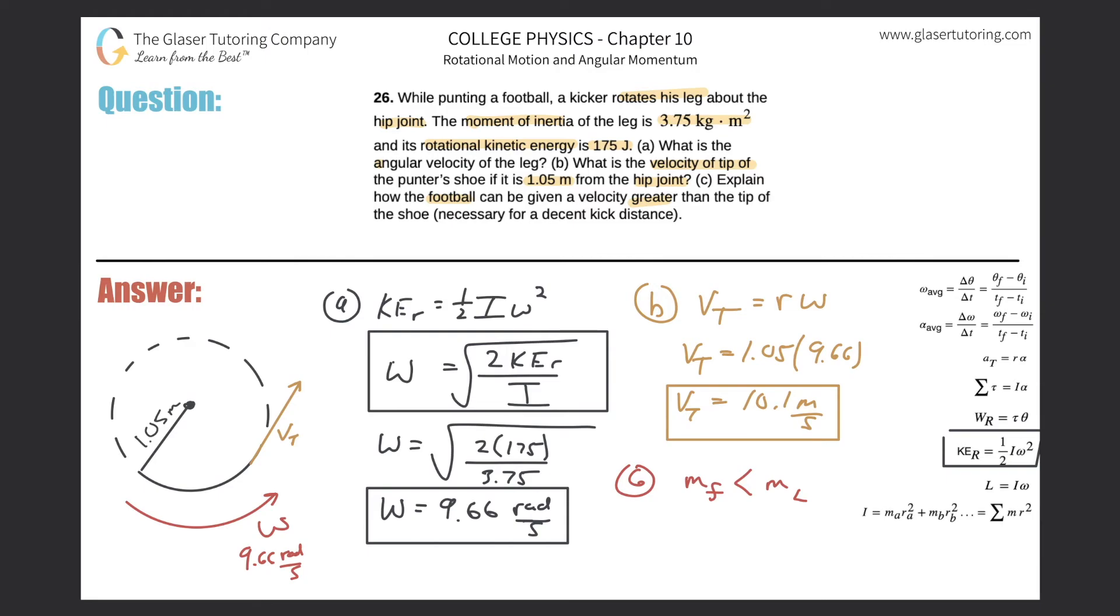The reason why the football could have a larger velocity than the leg is because the mass is smaller. Remember the formula p equals mv. If the momentum initially and finally are the same, then p has stayed the same.